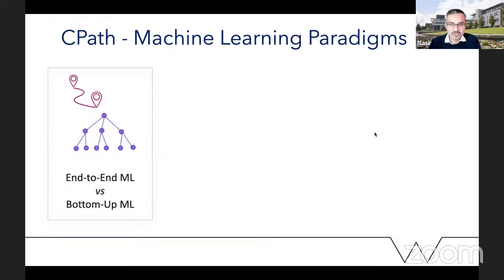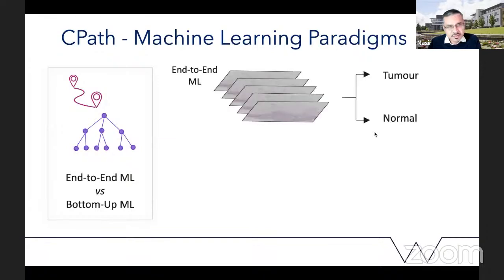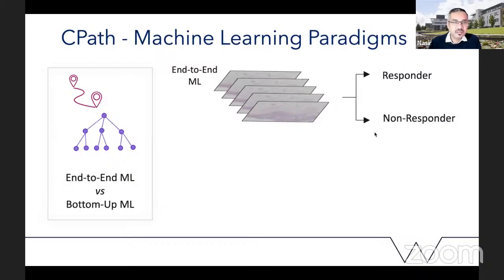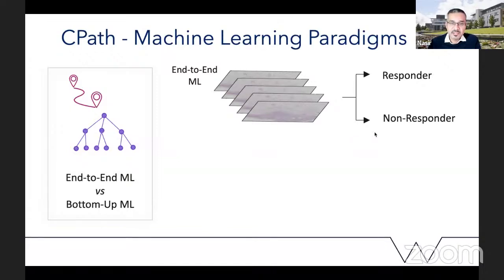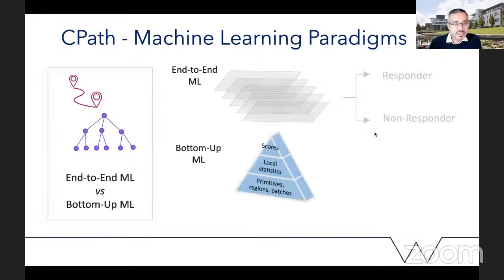The end-to-end machine learning framework works generally like this: you have a bunch of whole slide images given a label at the slide level — either tumor/normal, good prognosis/bad prognosis, responder/non-responder, or whether they have a mutation or not. All of that is put into a machine learning algorithm — increasingly a deep learning algorithm — that then decides where in those images the interesting and important patterns might be related to those labels.